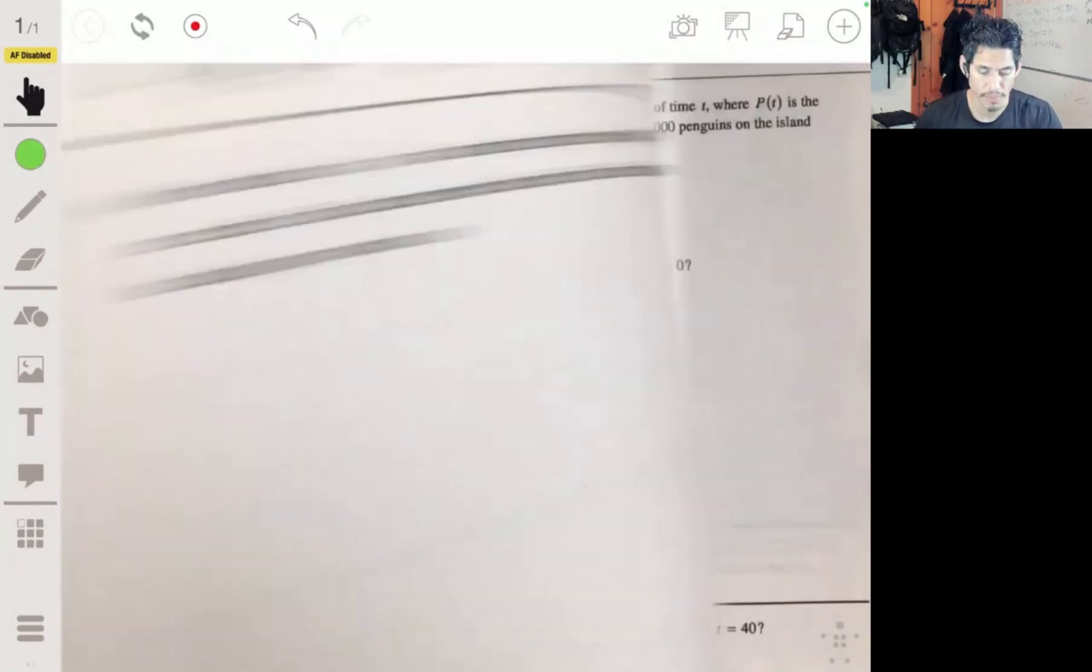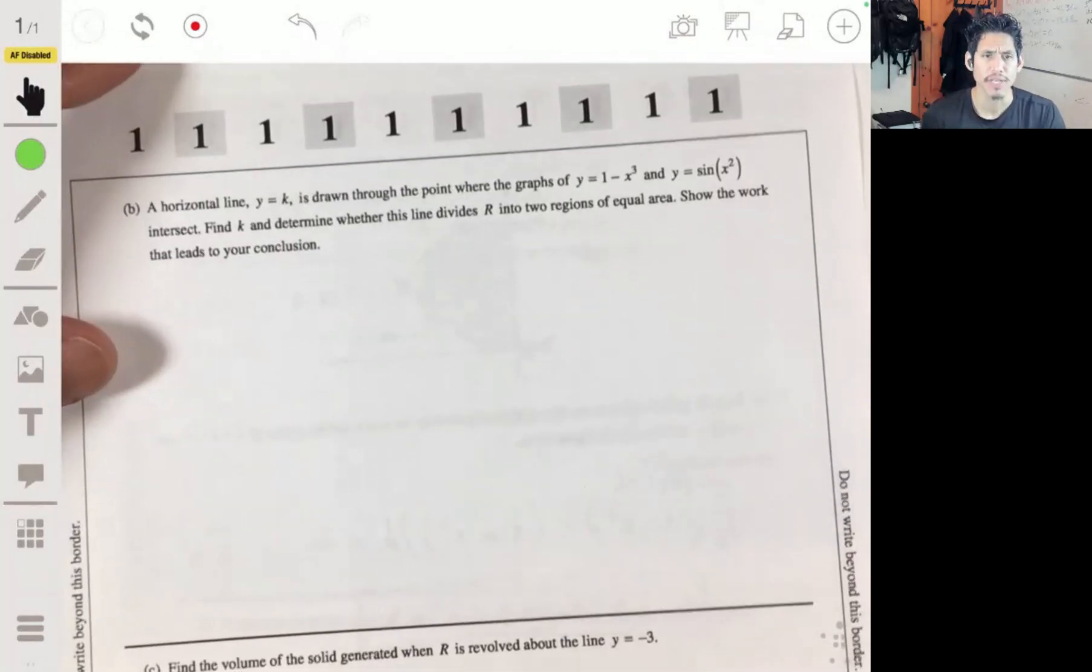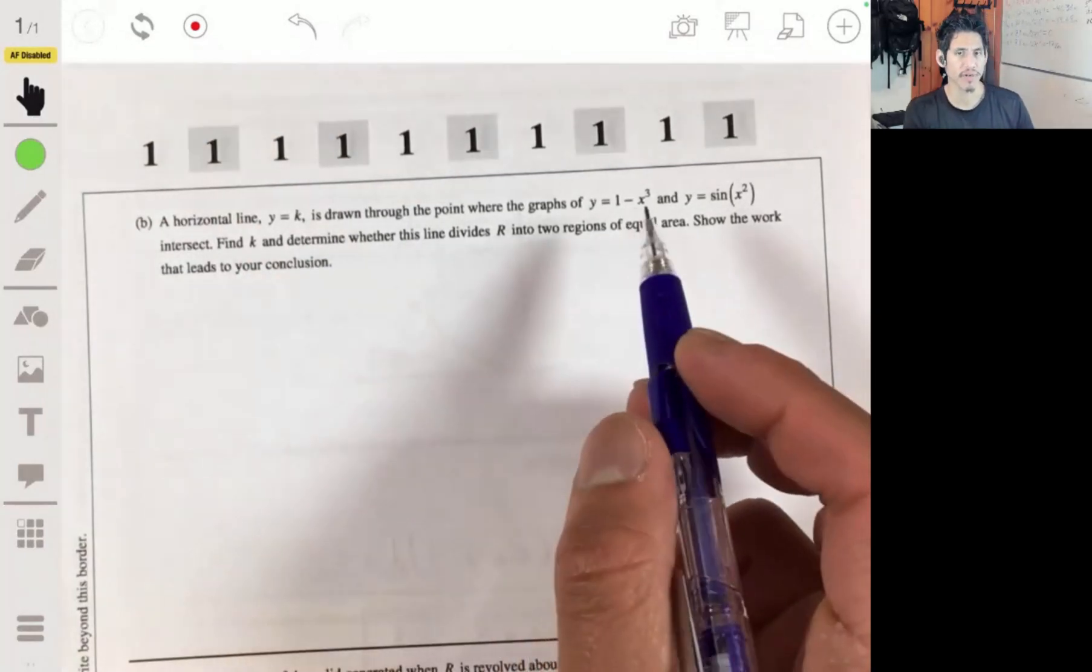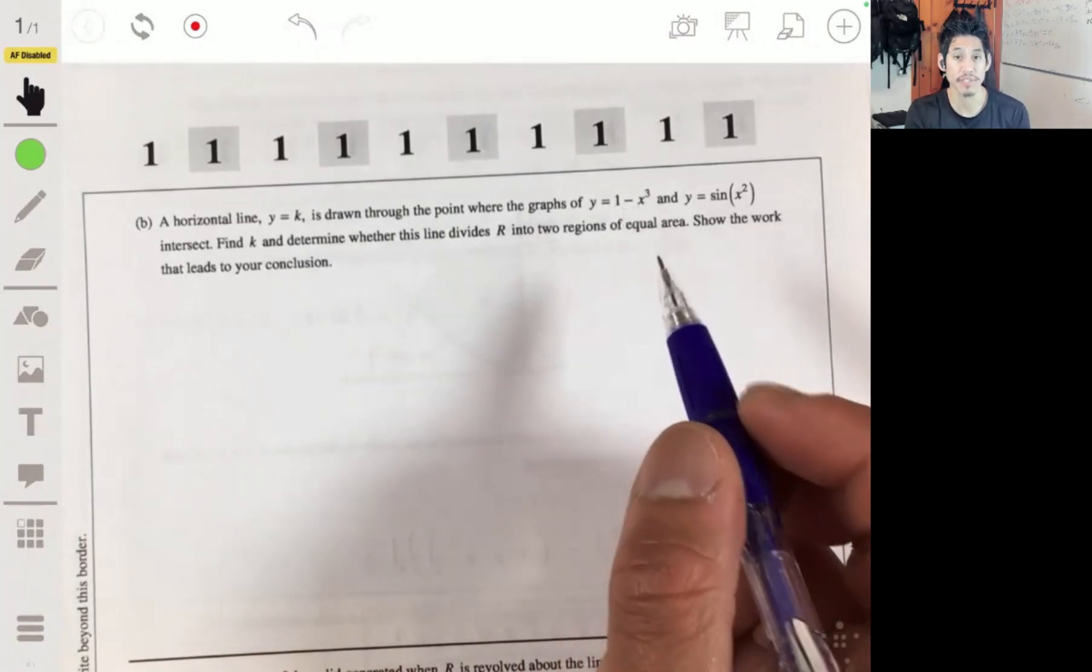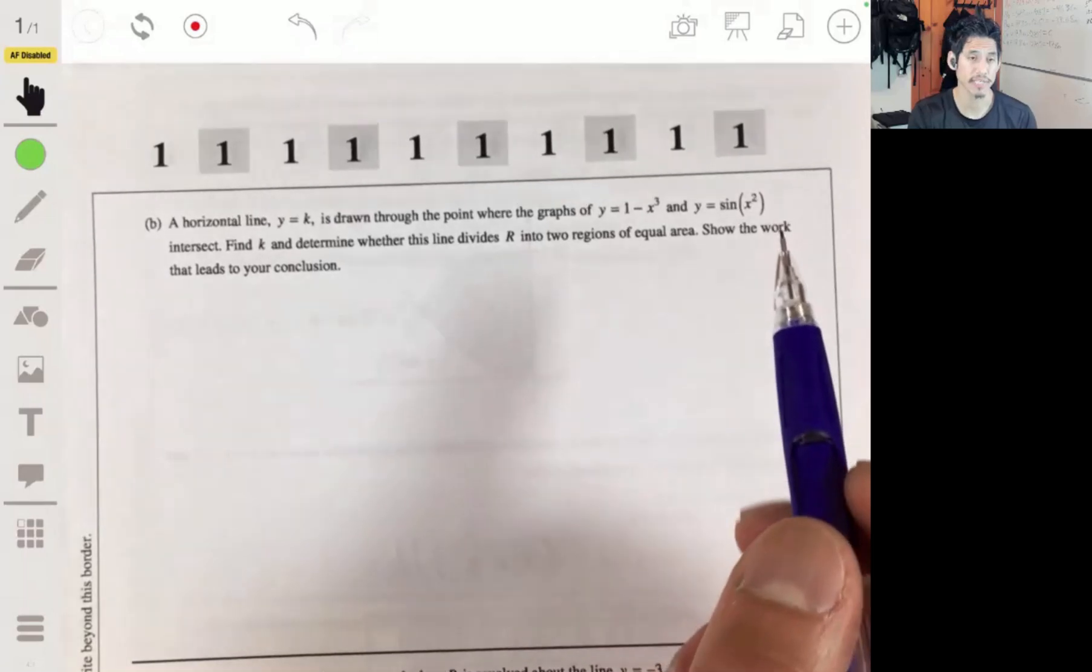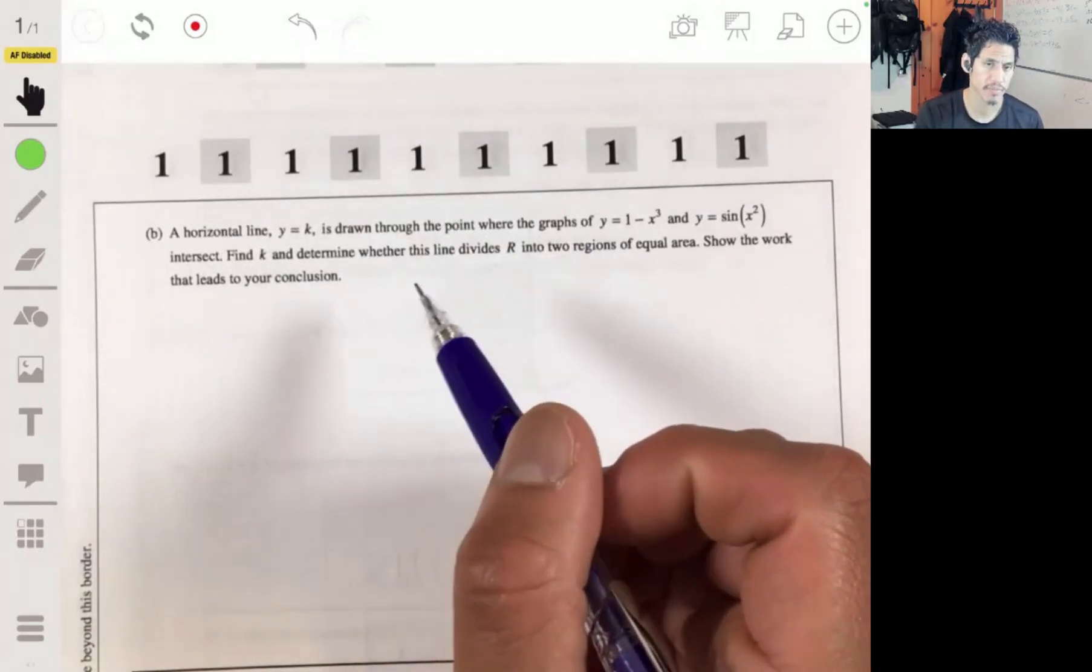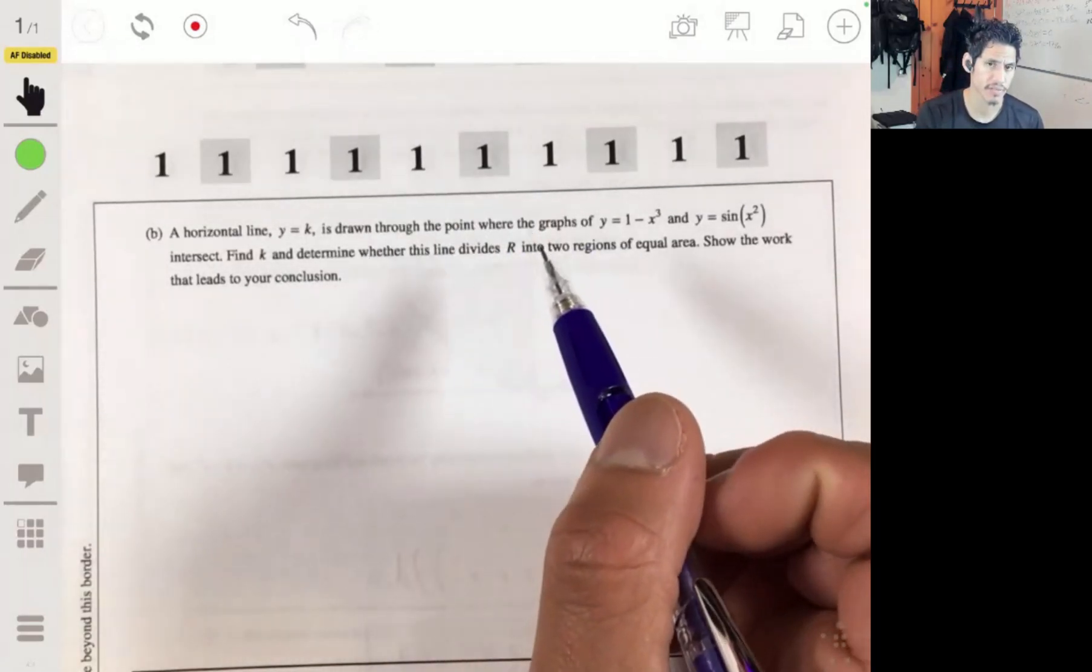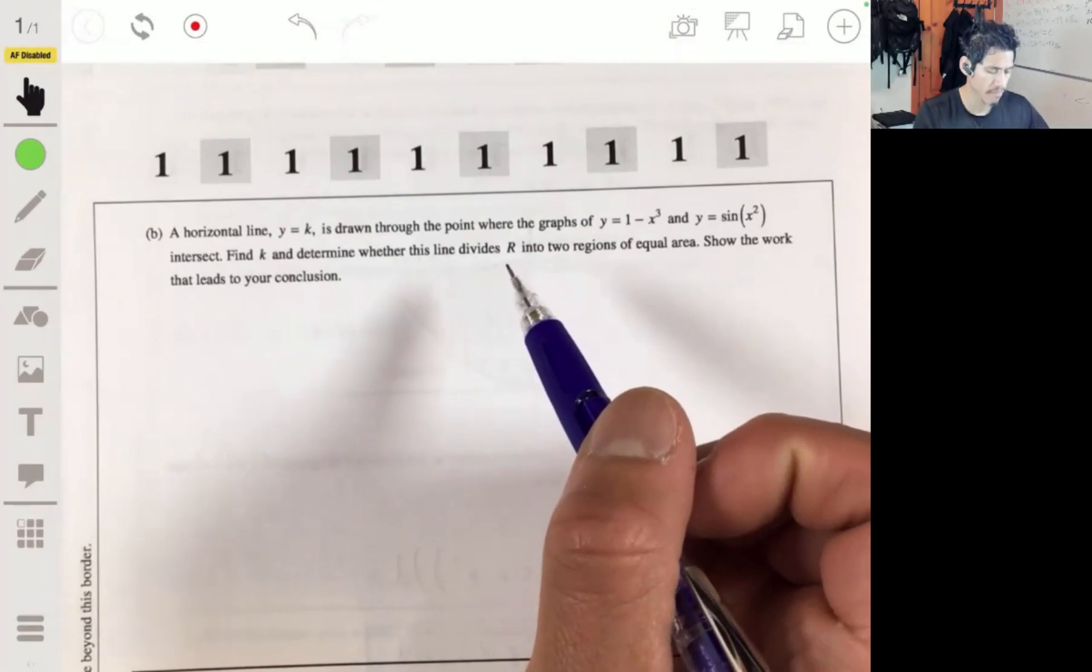All right, part B. The horizontal line y equals k is drawn to the point where the graphs of y equals 1 minus x cubed and y equals the sine of x squared intersect. Find k and determine whether this line divides r into two regions of equal area.